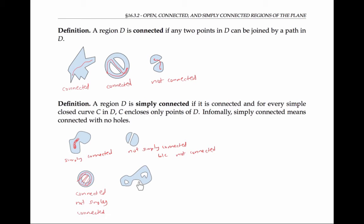This last region is also connected, but not simply connected. Try to draw a simple closed curve that shows that it's not simply connected. One example would be this curve here, which contains points that are not in the region. Another example would be this curve here. And a third example would be the curve that surrounds both of these holes — that curve also contains points not in the shaded blue region. Informally, this region is not simply connected because it has one hole, and this region is not simply connected because it has two holes. And this region here is simply connected because it doesn't have any holes.